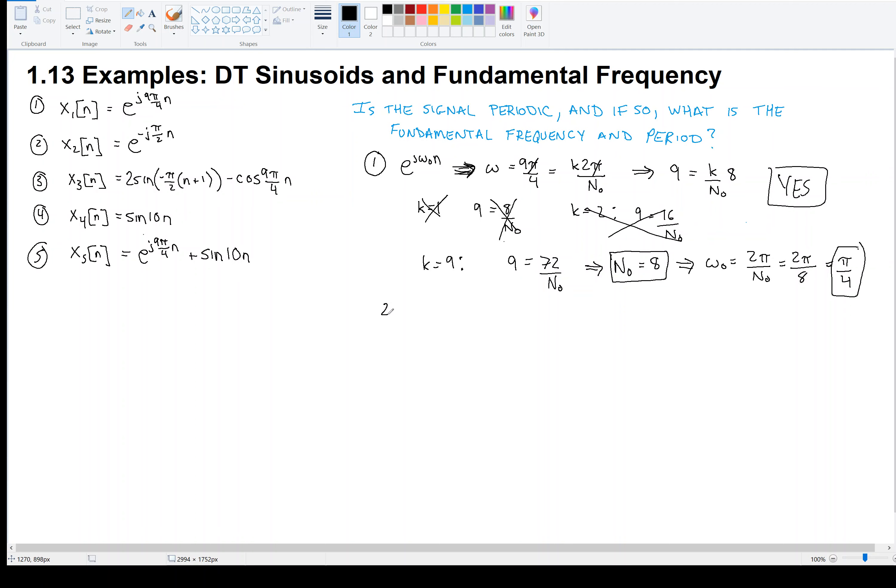Let's move on to example 2. A similar signal. We identify the ω here as being negative π over 2. So the question is, can I pick integers k, 2π over n₀ such that this is satisfied? You can try k equals 1. Notice that the π's cancel, which is critical here. If you want, you can multiply by 2 on both sides, and so you get negative 1 equals k times 4 over n₀.